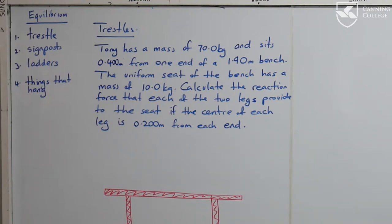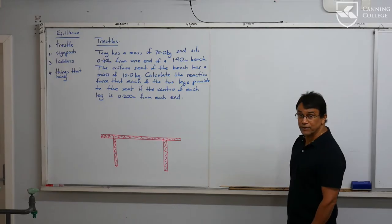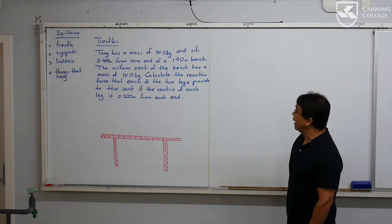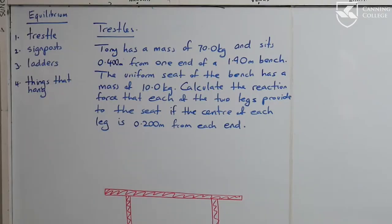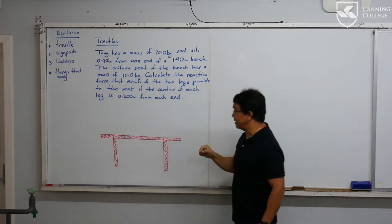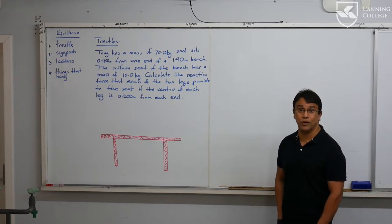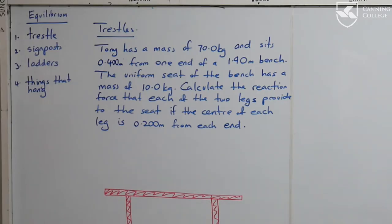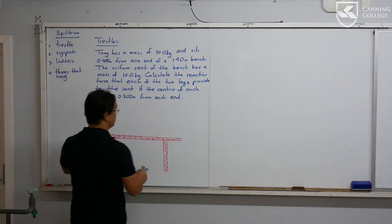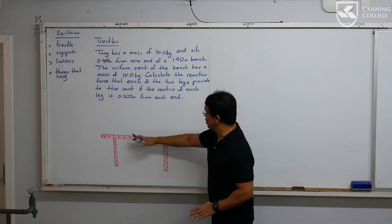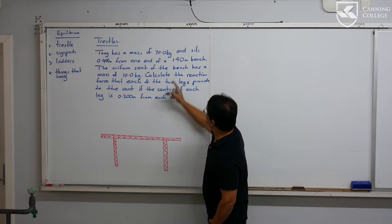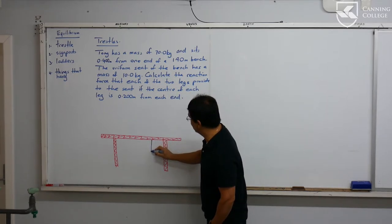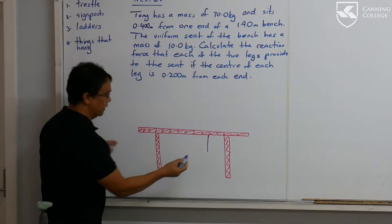Tony has a mass of 70 kilograms and sits 0.4 meters from one end of a 1.9-meter bench. The uniform seat — and remember in physics, if we see the word 'uniform,' that means the weight acts through the middle of the object, the center of gravity acts through its middle — has a mass of 10 kilograms. Calculate the reaction force that each of the two legs provides to the seat. The center of each leg is 0.2 meters from each end.